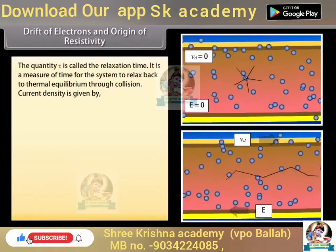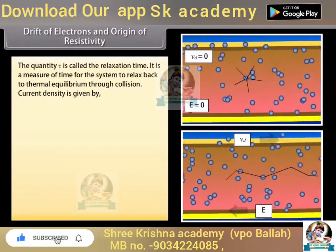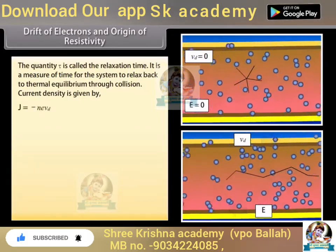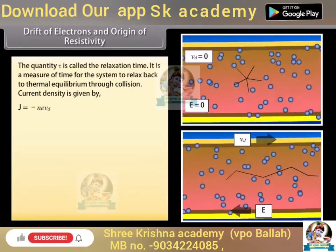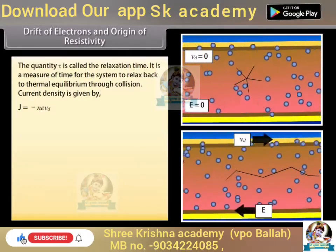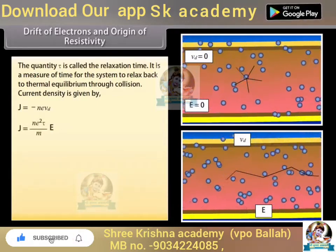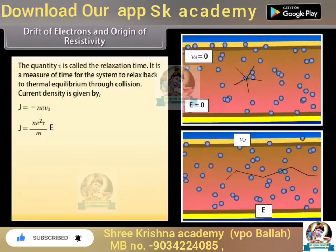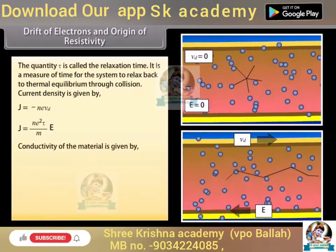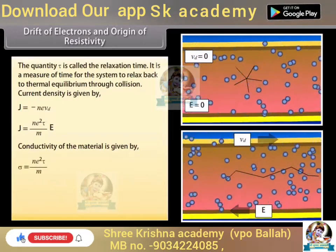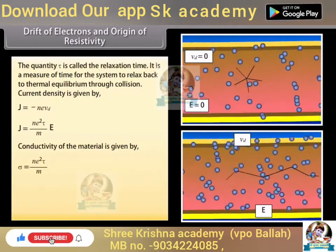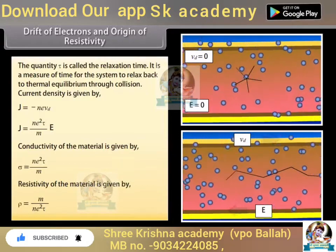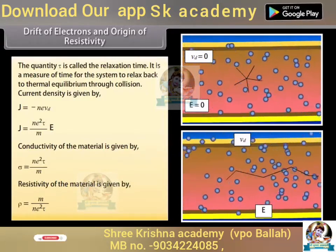The quantity tau is called the relaxation time — a measure of the time for the system to relax back to thermal equilibrium through collisions. Current density is given by J = −neVd. Substituting the value of Vd, we get J = (ne²τ / m) × E. Hence, conductivity σ = ne²τ / m, and resistivity ρ = m / (ne²τ).